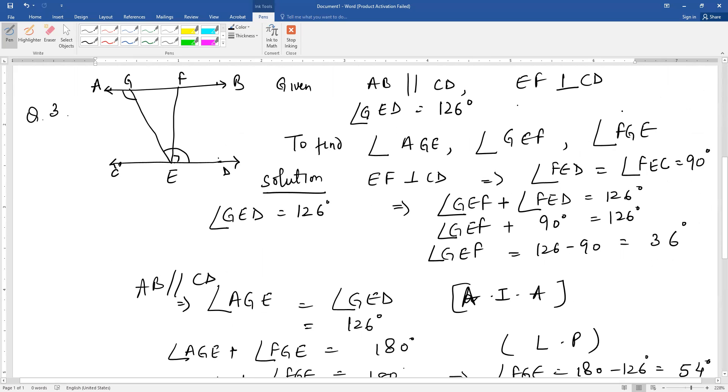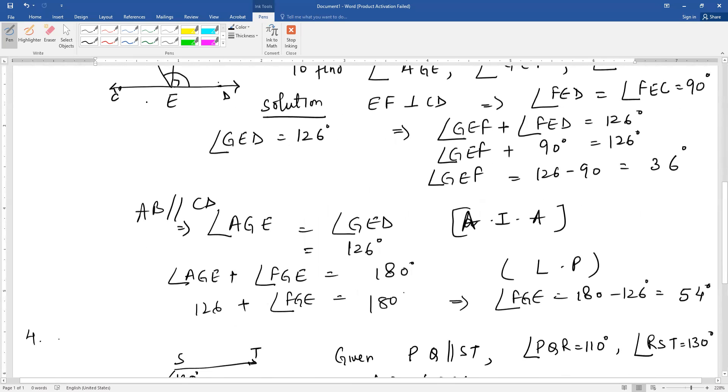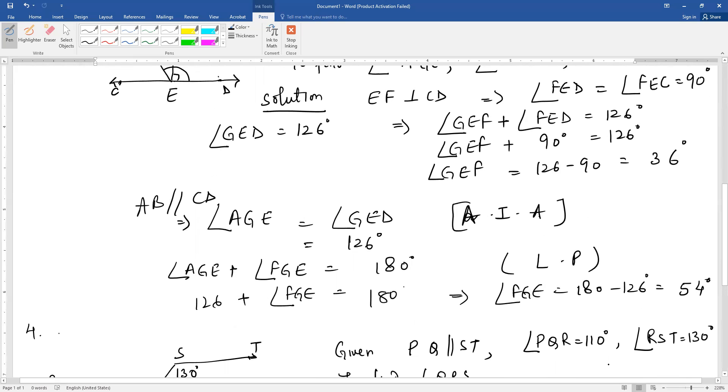Now the last angle is FGE. Angle AGE plus angle FGE form a linear pair, so their sum should be 180 degrees. That means 126 plus angle FGE is equal to 180. Therefore angle FGE is 180 minus 126, which equals 54 degrees.